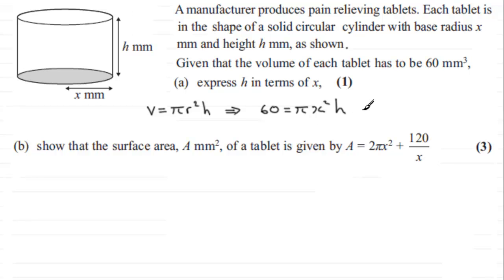So all we've got to do now is just rearrange this to make h the subject. So you just divide both sides by πx². So you end up with h equals 60 over πx². Okay, so that's h in terms of x.